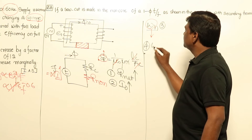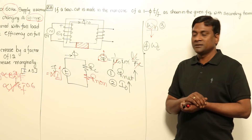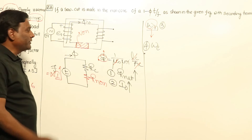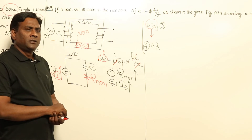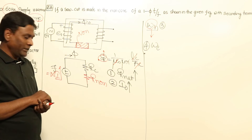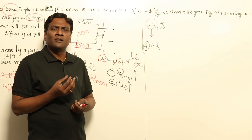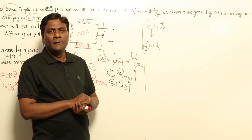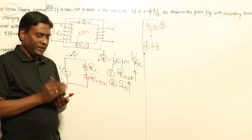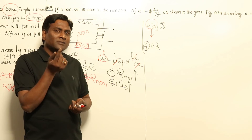Now let us think of eddy current loss — will it increase or reduce? We cannot say anything definitively, because he said it's non-magnetic material, and non-magnetic material can be either an electrical conductor or an electrical insulator. Eddy current losses happen in electrical conductors, not in electrical insulators. All magnetic materials are electrical conductors — ferromagnetic material like iron is an electrical conductor. So in magnetic material, both hysteresis loss and eddy current loss occur together.